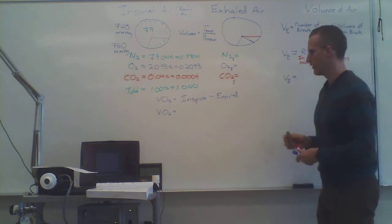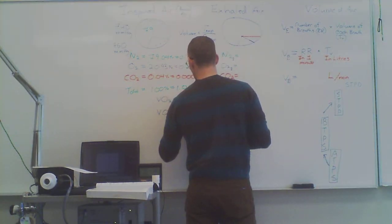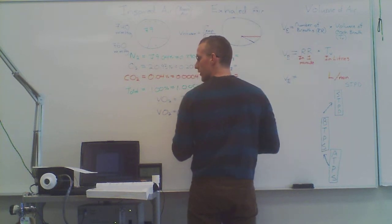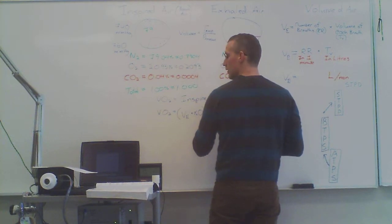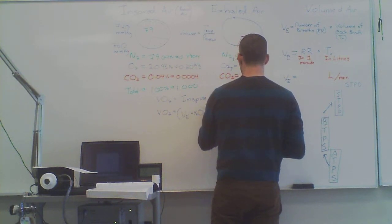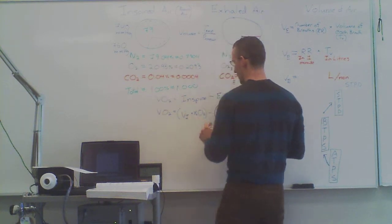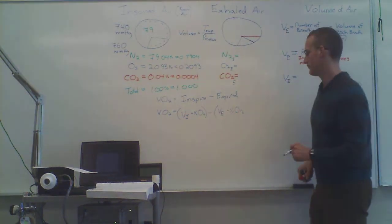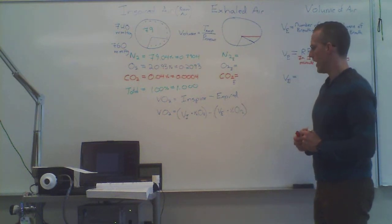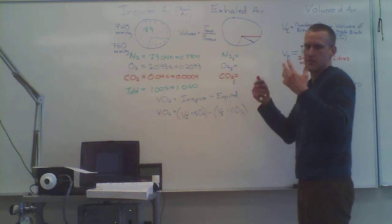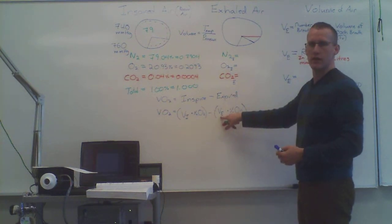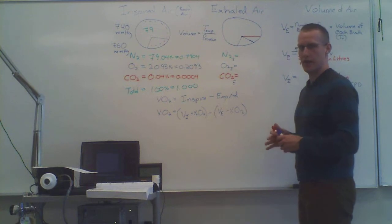So the equation is volume expired air, which the metabolic cart measured, multiplied by the percentage of oxygen, subtracted by volume expired, times the percentage of oxygen. Sorry, my correction, volume inspired. Now these values are not measured by the cart, because the volume of air you breathe in just comes into the mouthpiece. The volume of air you breathe out is measured. But luckily we can rearrange the variables a bit and figure it out.